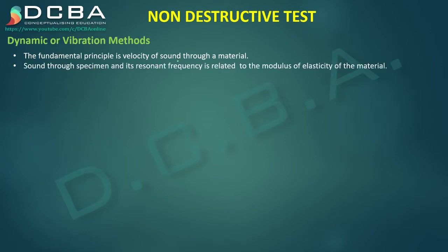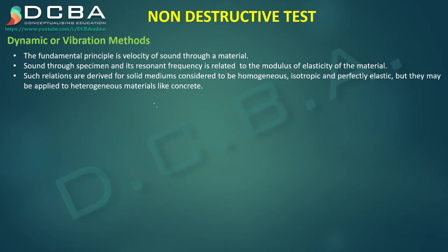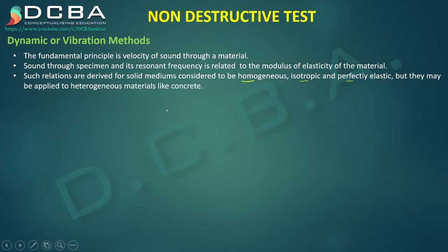Sound through a specimen and its resonant frequency is related to the modulus of elasticity of the material. Such relations are derived for solid mediums considered to be homogeneous, isotropic, and perfectly elastic, but they may be applied to heterogeneous materials like concrete as well. Concrete cannot be considered perfectly homogeneous because there is no precise control over how aggregates set or whether properties are uniform throughout the cross section.